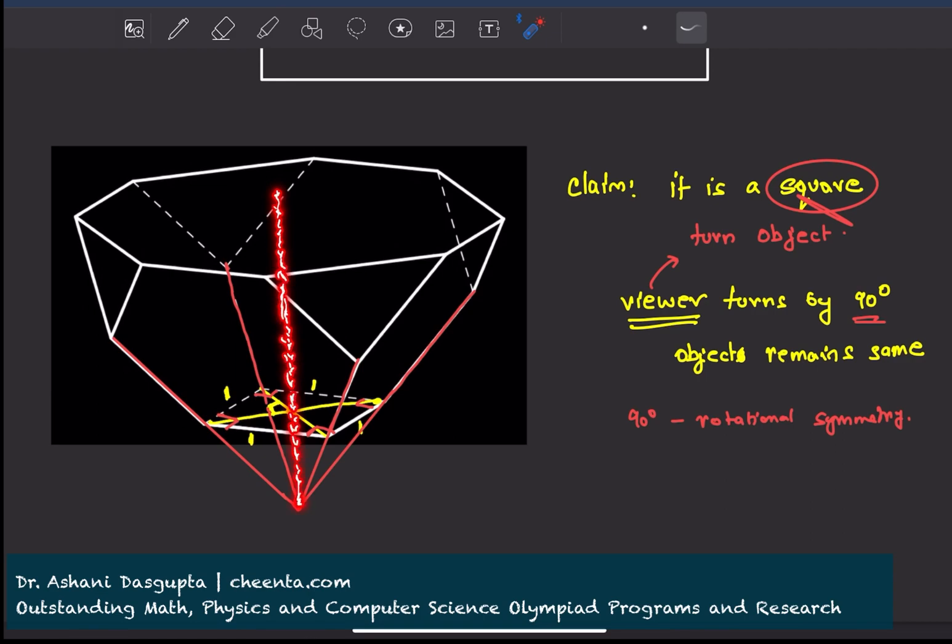All of these lines will meet at the axis of symmetry. Otherwise, the object wouldn't be symmetrical. Using symmetry, we can also say about concurrency of lines. See how beautiful that is.